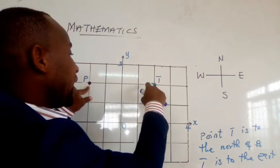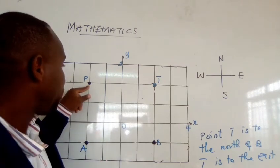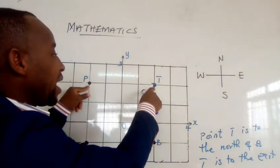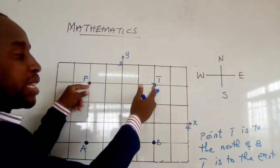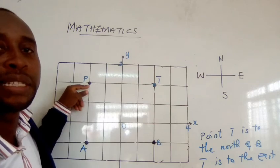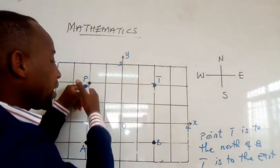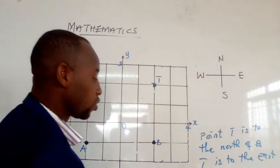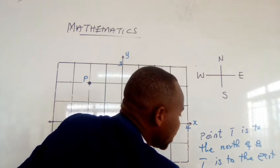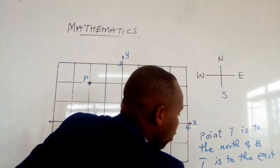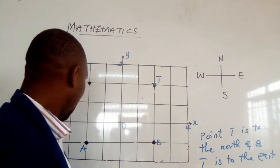Now let's describe point P. We will stand here to describe point P. When you are standing here, you see that point P is to the west of T. So we say: point P is to the west of T.